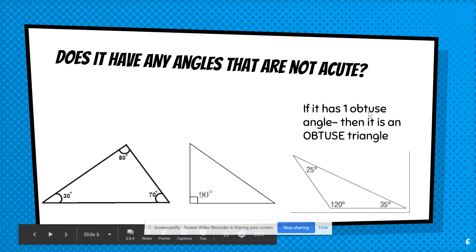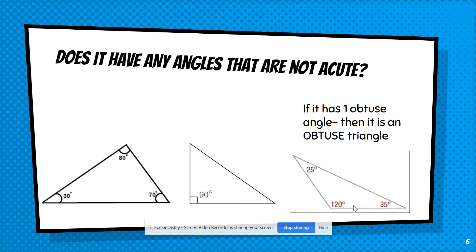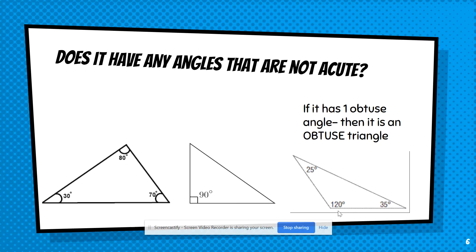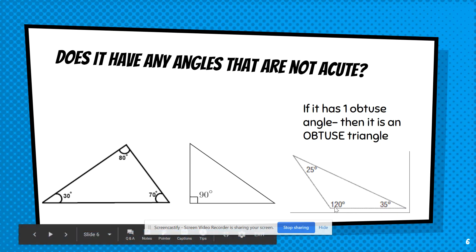If it has one obtuse angle — for example, a 120-degree angle — remember that an obtuse angle is any angle that measures between 91 and 179 degrees: greater than 90 and less than 180. Since this triangle has an obtuse angle, it is an obtuse triangle. An obtuse angle automatically makes it an obtuse triangle.